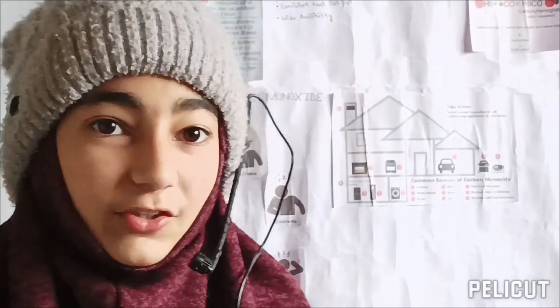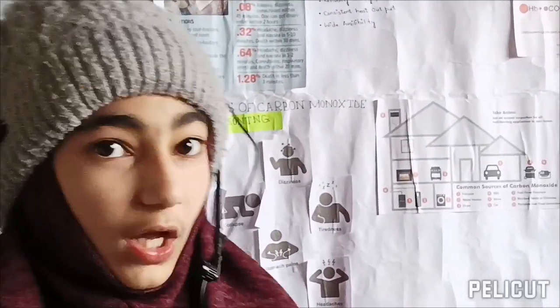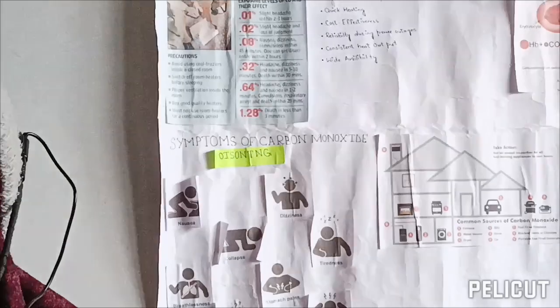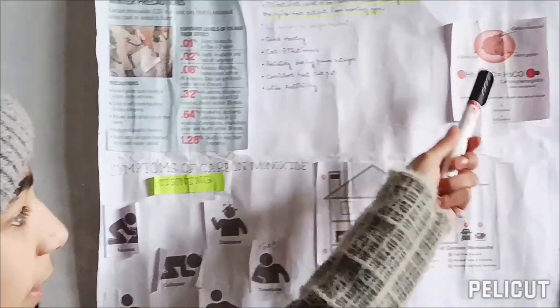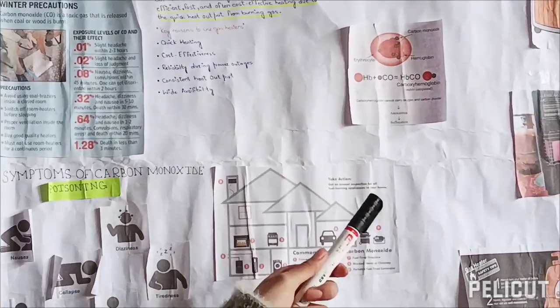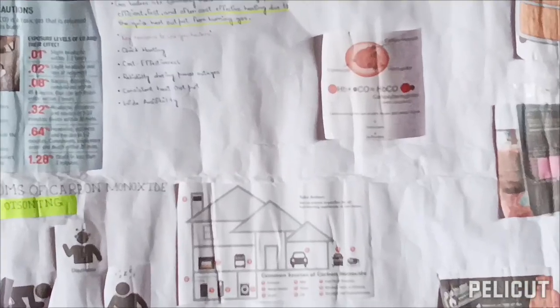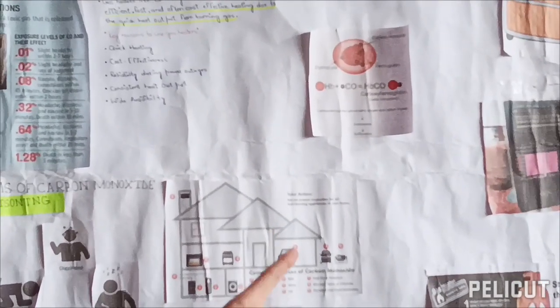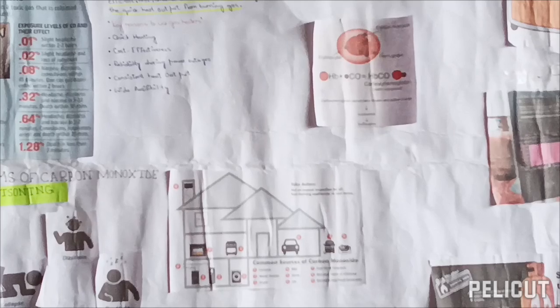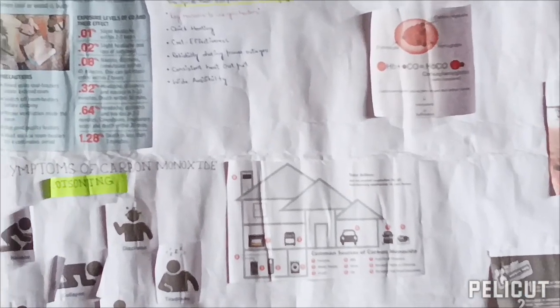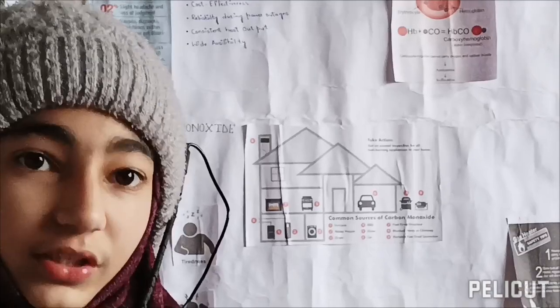Next I will tell you why it is dangerous to use a gas heater in a closed room. As we know that gas heaters release carbon dioxide with some unburnt gases known as carbon monoxide which is poisonous. When this carbon monoxide mixes up with our hemoglobin it causes carboxy hemoglobin to form. Carboxy hemoglobin cannot carry oxygen and carbon dioxide which leads to anoxemia which is suffocation.